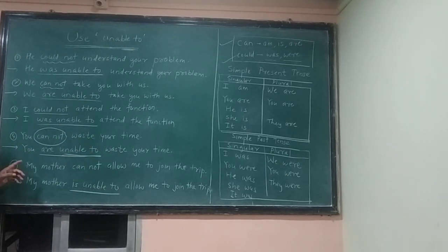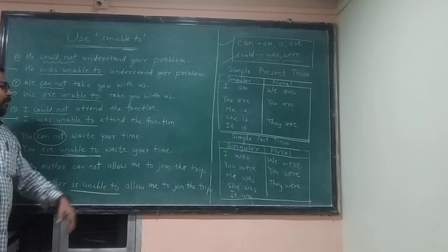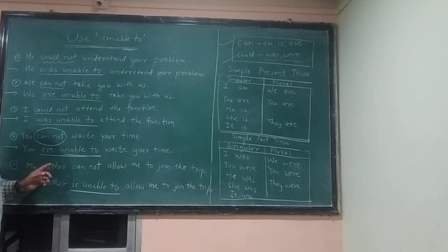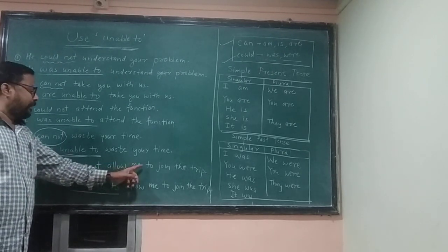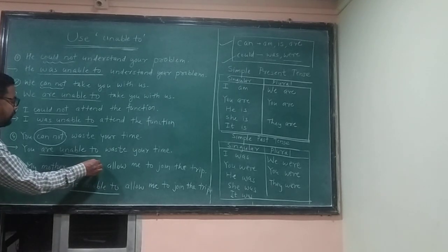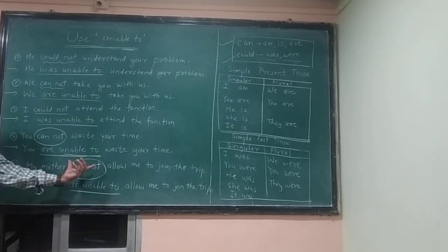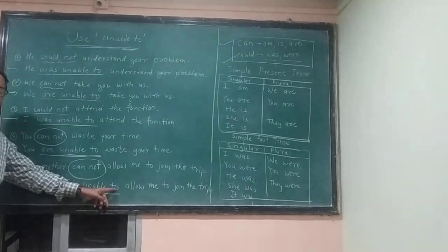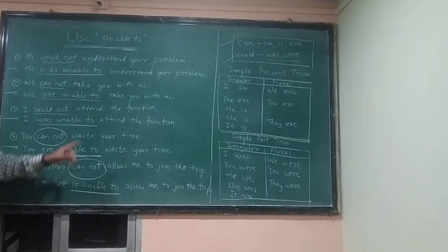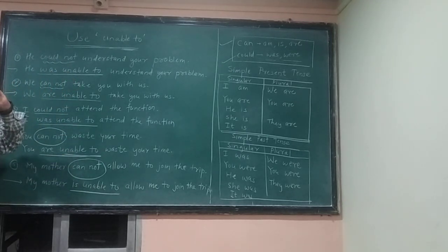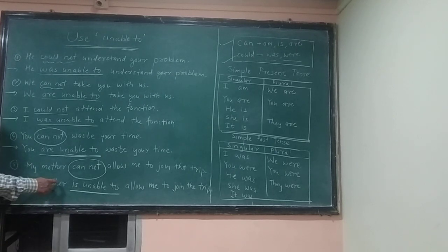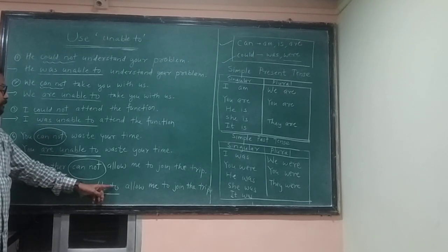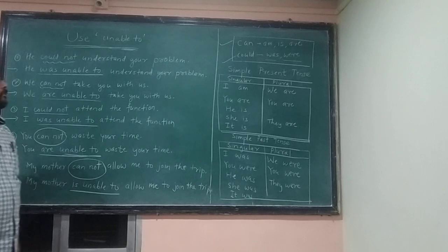The last sentence: 'My mother cannot allow me to join the team.' Here also 'cannot' is removed and replaced with 'unable to.' 'My mother' is singular, so we use 'is.' The sentence becomes: 'My mother is unable to allow me to join the team.'